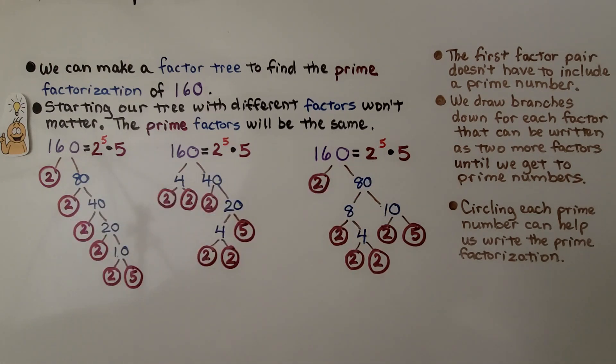The first factor pair doesn't have to include a prime number. So here it does, 2 is a prime number, but here we started with 4 times 40. When we find factors for 80, we find 2 times 40. When we find factors for 40, we can do 2 times 20. And for 20, we can do 2 times 10. We could even do 4 times 5, couldn't we? Then for 10, we do 2 times 5.